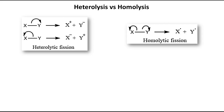Before discussing free radicals, we need to understand heterolysis and homolysis. In heterolysis, when the bond between atom X and atom Y is broken, both electrons go to the more electronegative atom. If Y is more electronegative, both electrons go to Y. If X is more electronegative, X becomes an anion. This is heterolytic fission, which can generate carbocations or carbanions if the atom is carbon.